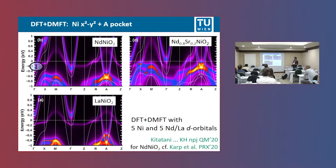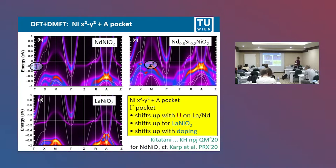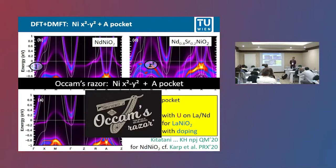The z² orbital is still below the Fermi energy. Based on these ab-initio calculations with all d-orbitals included, let's arrive at a simple description: I have this x²−y² orbital and an A pocket, and in some compounds at low doping, possibly also a Γ pocket. But the first two are there all the time, also in the superconducting regime, so these are the relevant orbitals in our calculation.